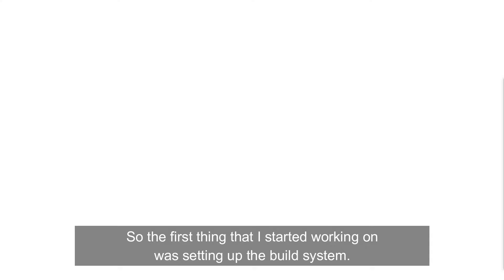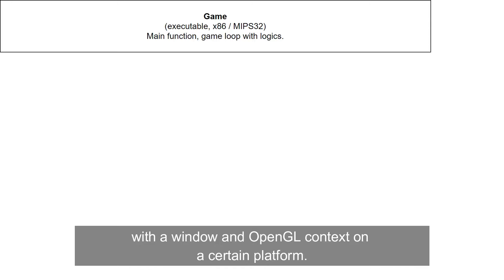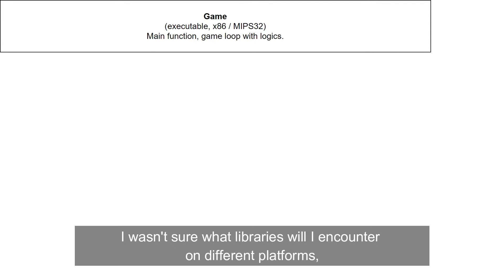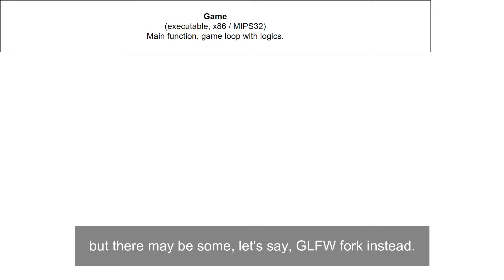The first thing I started working on was setting up the build system. I started wondering which targets I need. I certainly needed a game target — an executable containing the main function, game logic, and the game loop. I also needed all the boilerplate required to start up an application with a window and OpenGL context on a certain platform. I wasn't sure what libraries I would encounter on different platforms — there may be no implementation of SDL on some platform, but there may be a GLFW fork instead.